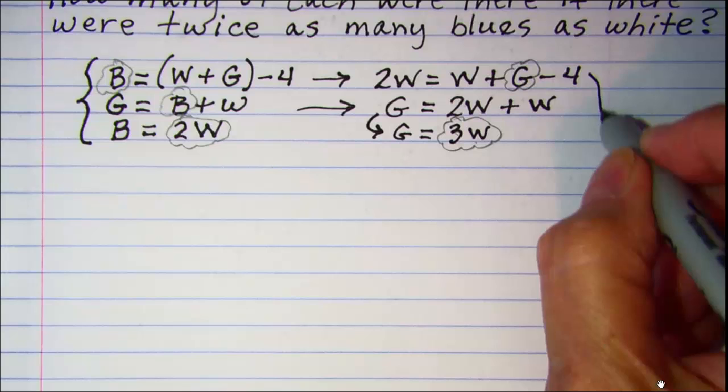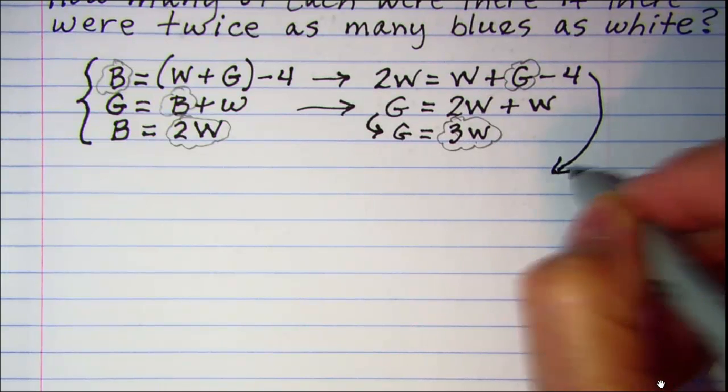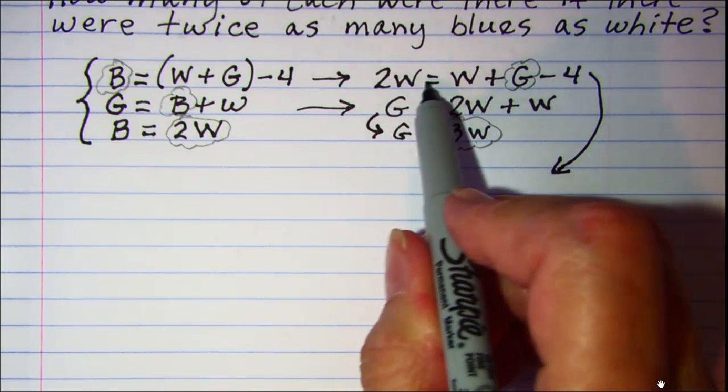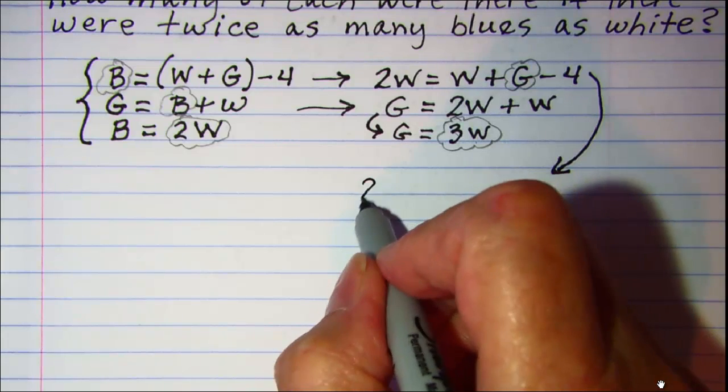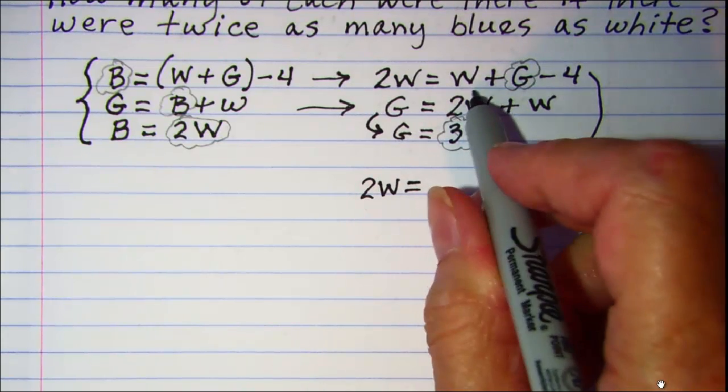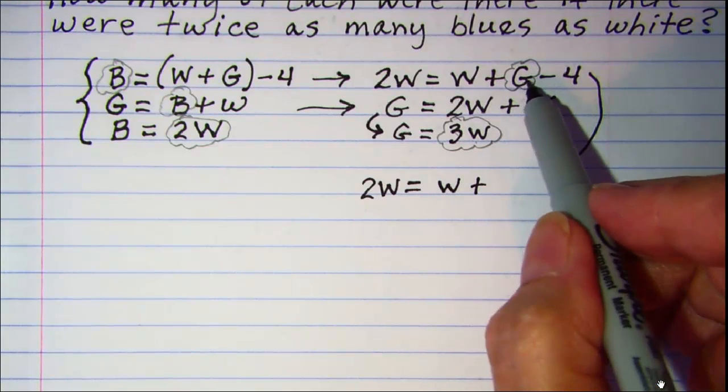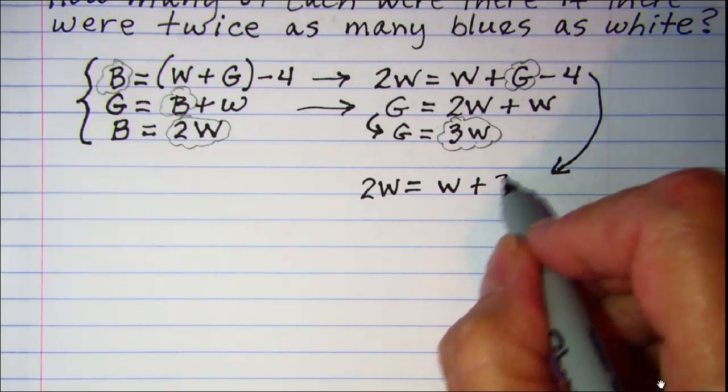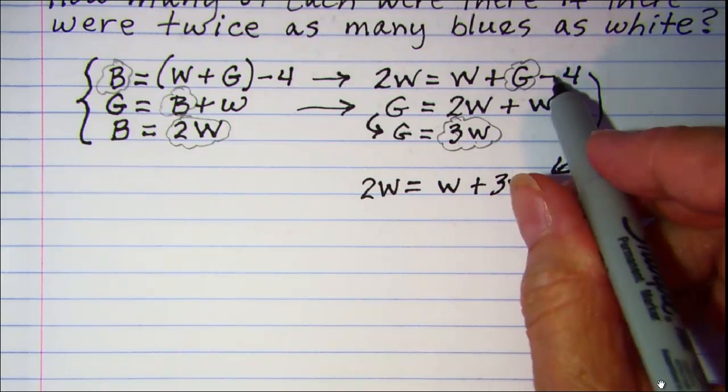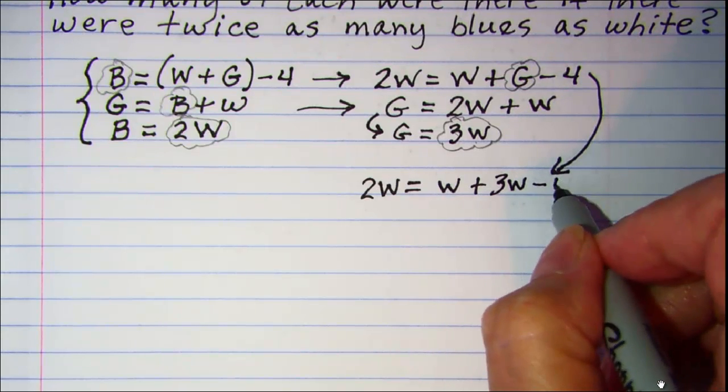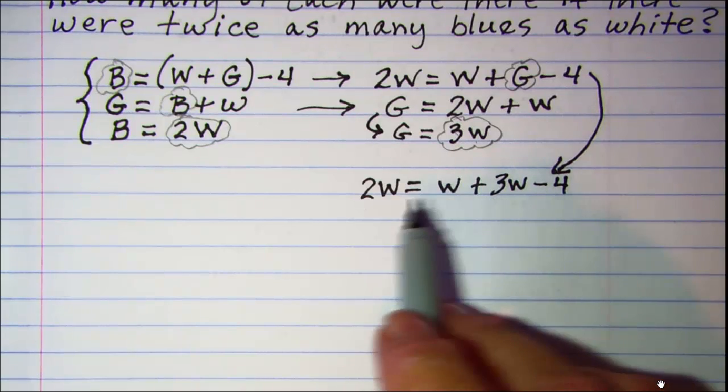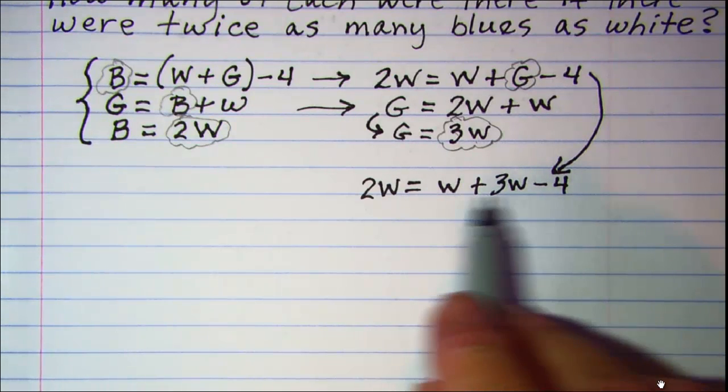So then this equation becomes 2W equals W plus, and then in place of G I'll put 3W minus 4.